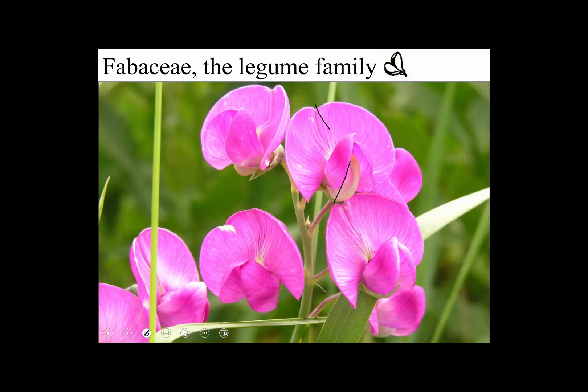Here's a little iconography by Peterson showing exactly that: the big standard slash banner, the wings, and if you look right at the bottom you can convince yourself he's showing us the keel. Fabaceae — it's fabulous.